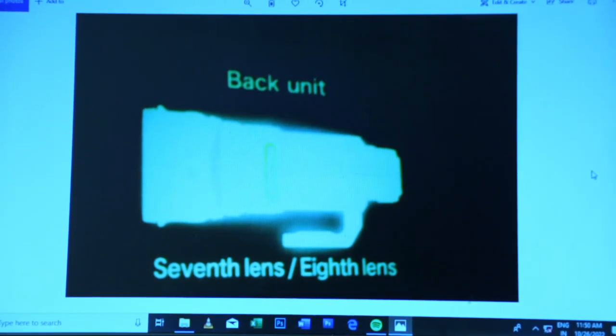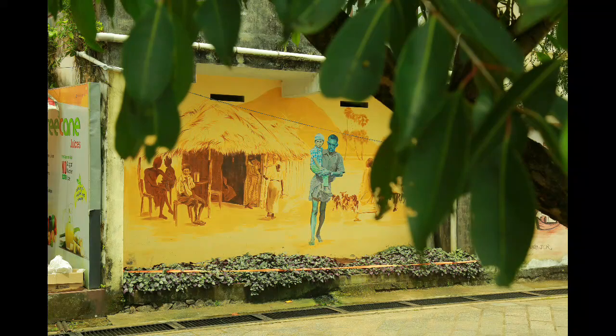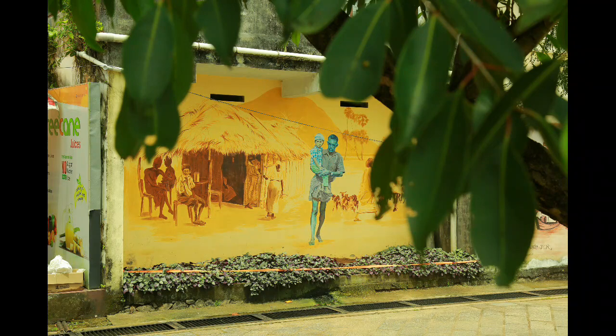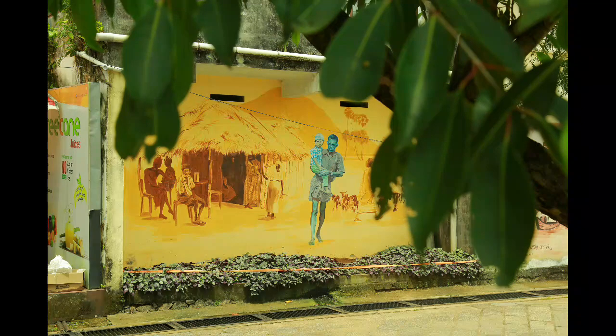This is the focal length of the lens. We have 24, 35, 50. This is the focal length of the lens. Now we can see the lens. I have shown the focal length of the lens. I will show you the video.